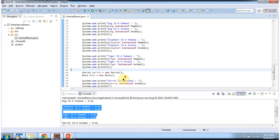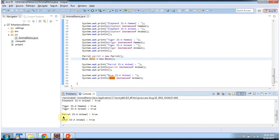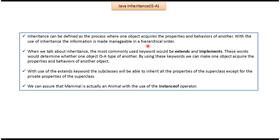Then I am creating a parrot object and a dove object, and checking: parrot is animal — true, dove is animal — true. Using inheritance, one object can acquire properties and behaviors of another object. The most commonly used keywords are extends and implements. Using these keywords we can make one object acquire the properties and behaviors of another object. Using the extends keyword, subclasses will be able to inherit all properties of the superclass except the private properties. This is about Java inheritance and the IS-A relationship. Thanks for watching.